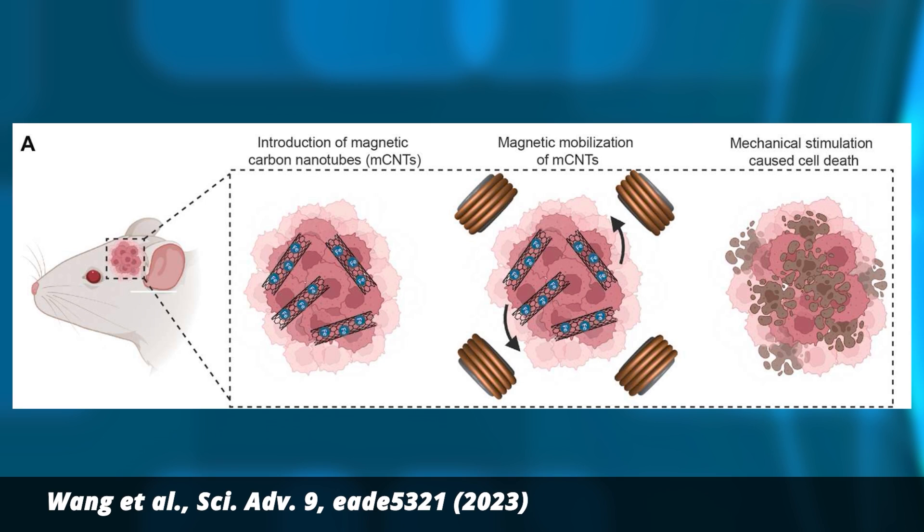Once the mice had developed tumors, the team injected the nanoparticles. The particles were coated with an antibody that's attracted to a protein in the cancer cell, so the cells absorbed them. It's sort of a Trojan horse approach, inviting the enemy inside. A day later, the researchers put the mice in a rotating magnetic field at 20 millitesla and 20 hertz for 30 minutes. They repeated this every two days, five times in total.